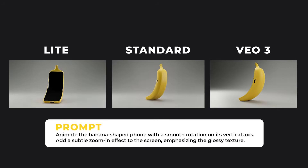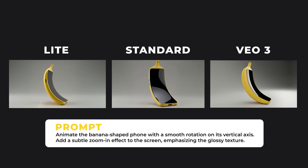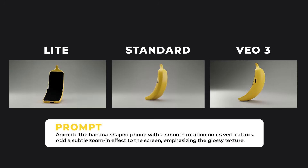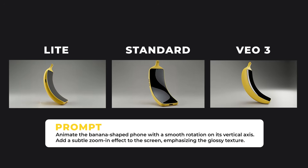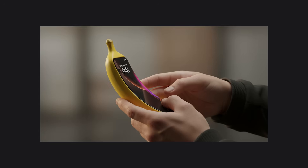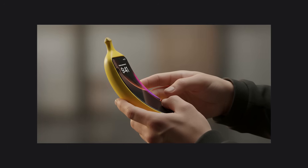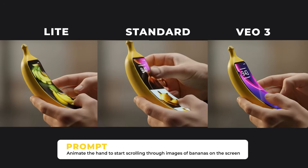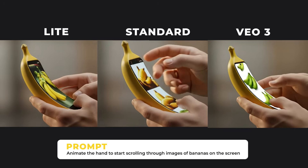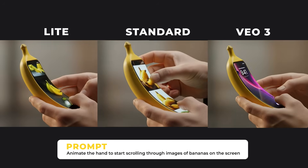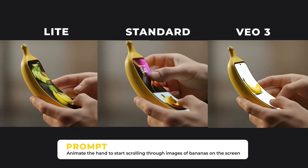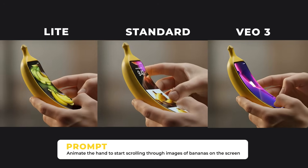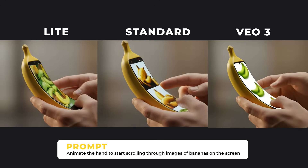I actually think all three models did a really good job at animating this image. For very simple videos where it's just simple movement, definitely use the light or normal model as they're a lot cheaper than Veo 3. But when I try to create a video with a more complicated prompt, Veo 3 has the edge — the light and normal model videos are still pretty good, but they haven't followed the prompt exactly, as there aren't quite bananas showing on the screen as the person is scrolling. The Veo 3 version looks really clean and they are definitely bananas showing on the screen.